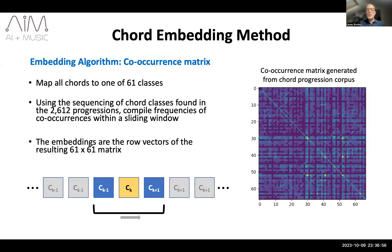So to improve the expressiveness of the data, we use music theory to map all symbols to a set of 61 representative classes. After mapping the chords to classes, we then embed them using their frequencies of co-occurrence. This is like the bag of words method used in Word2Vec, and for our problem results in a 61 by 61 matrix. The rows of that matrix then become the chord class vectors.